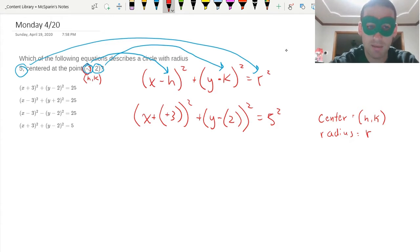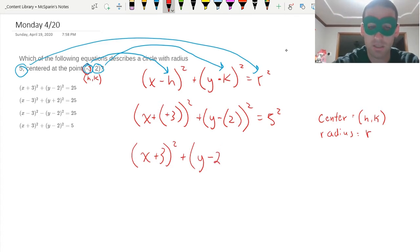A minus and a minus together like that make a plus. I'm going to have X plus 3 squared plus Y, and I can drop the parentheses now because it's just a minus, Y minus 2. And then 5 squared is 25.